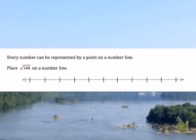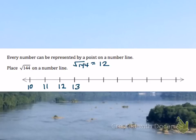Every number can be represented by a point on a number line. We want to place the square root of 144 on a number line. The square root of 144 is equal to 12, so we can locate it fairly easily. I'm going to start my number line at 10, then 11, 12. The square root of 144 is 12, so that dot falls right on 12, and I plot the dot right on the number line at 12.